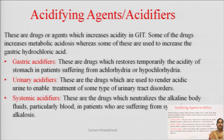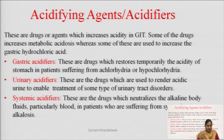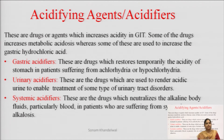Next is urinary acidifiers — jo urinary acidifiers hain, inko hum basically jo urinary tract ki disorders hote hain, ya phir jo UTI infection hote hain, unko treat karne ke liye dete hain. Ye kya karte hain — jo humari urine hai, ye usko acidic banate hain. Next is systemic acidifiers — ye jo drugs hoti hain, ye kya karti hain, jo alkaline compounds hain ya phir jo alkaline body fluids hain, specially jaise ki particularly humara blood hai, toh un patients jismein alkaline zyada hai, usko neutralize karne ke liye hum acidifiers dete hain. Neutralization reaction basically kya hoti hai — jab bhi hum kisi acid ko base ke saath react karate hain, toh it is a neutralization reaction. Toh alkalosis hai, matlab alkaline zyada hai, base zyada hai, toh usko neutralize karne ke liye hum acid denge — isliye jab systemic alkalosis hai toh usko treat karne ke liye hum acidifying agents ya phir acidifiers dete hain.